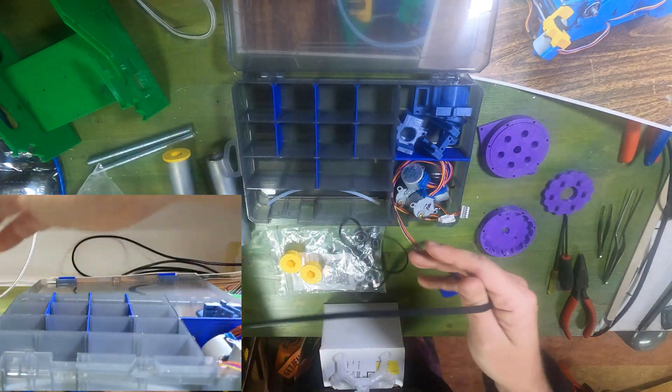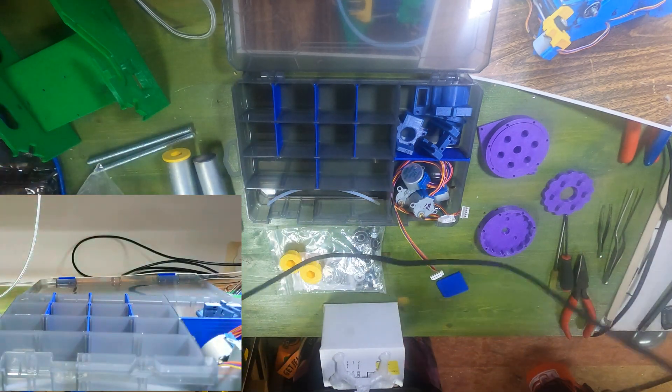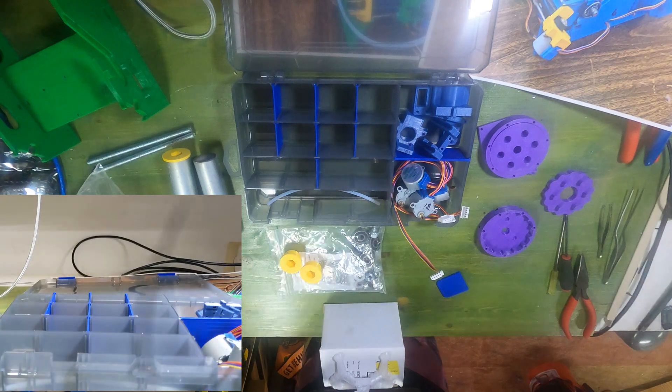Baby belt uses GT2 belts for motion. One big length, so we'll cut that for the X and Y axes.